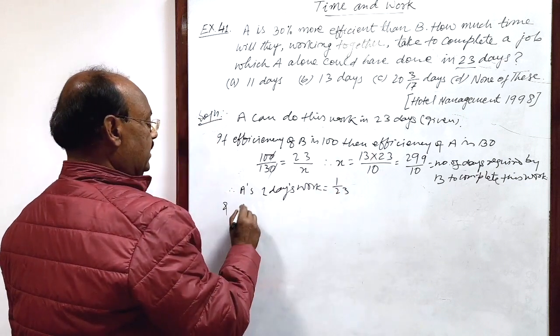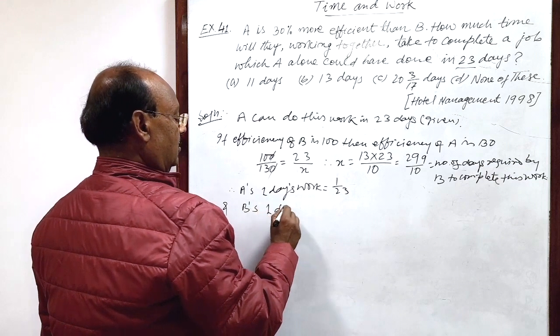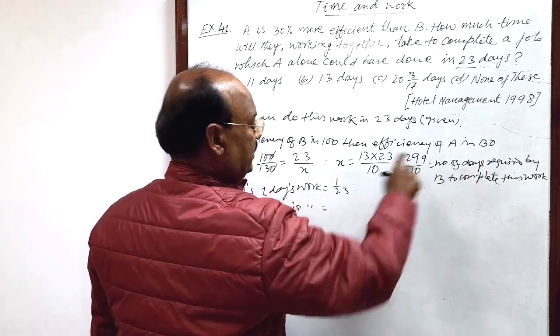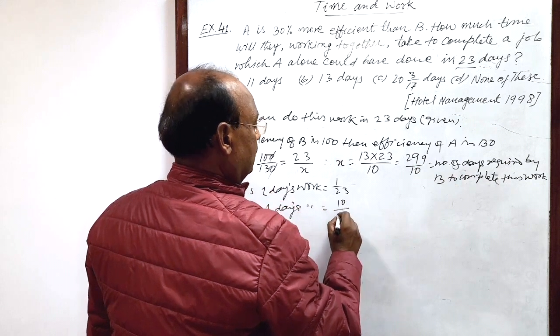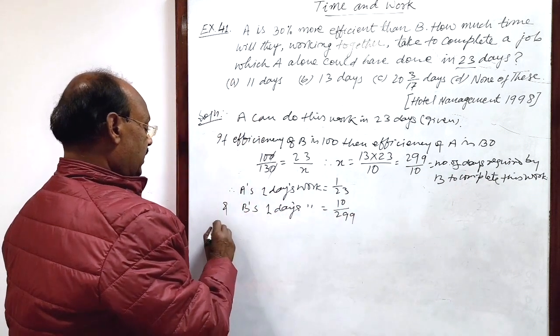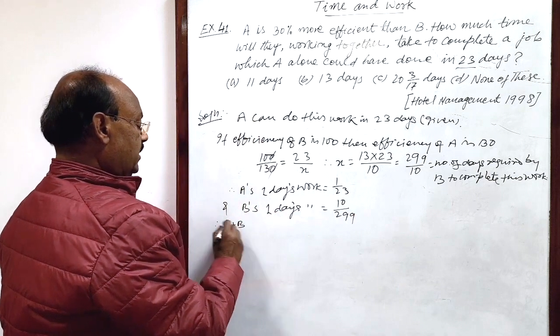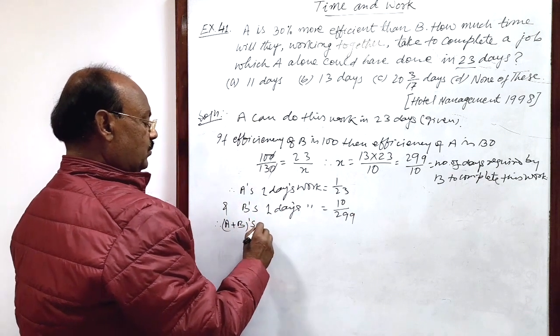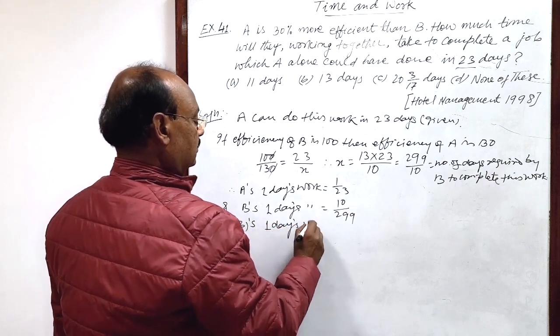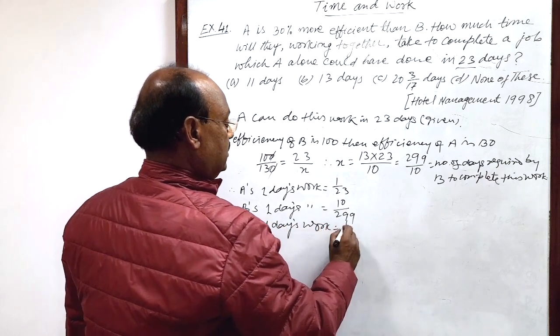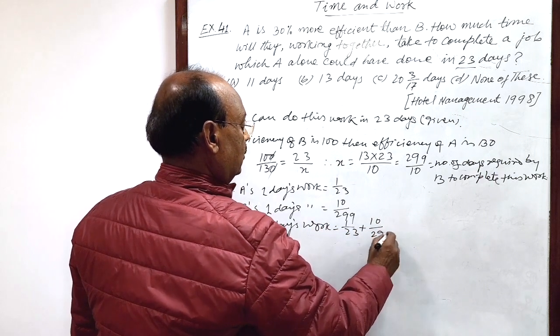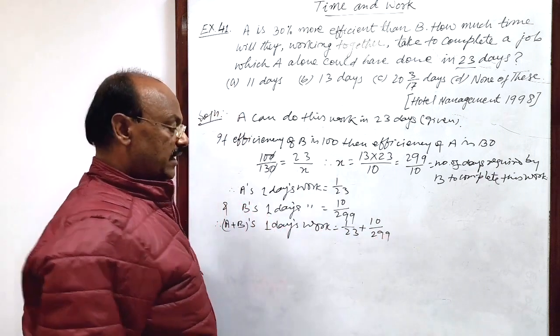And similarly B's one day's work is reciprocal of this much, means 10 by 299. So therefore when they are working together, then A plus B's one day's work is 1 by 23 plus 10 by 299. Let us simplify it.